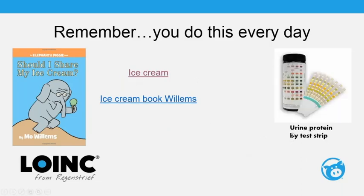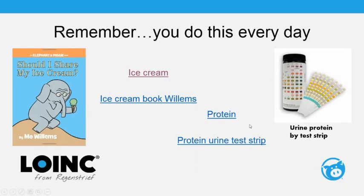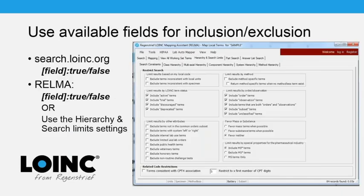The same principle applies to looking for a lab test in LOINC. If you're looking for a test to represent urine protein by test strip, would you search for 'protein' or 'protein urine test strip'? You should use the same search strategies you use elsewhere in LOINC. Don't be intimidated by all the codes — you can use search features to narrow down your results and find the one you want.